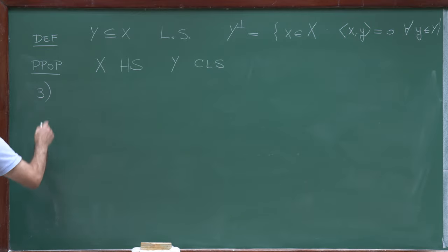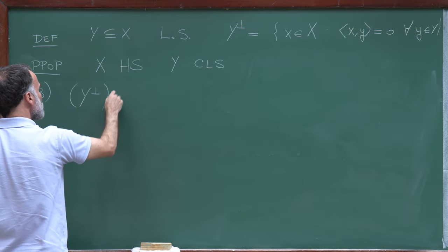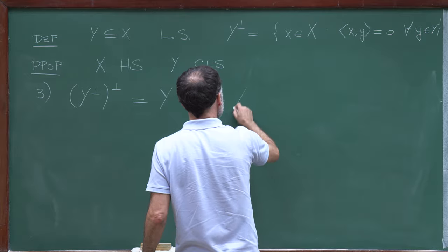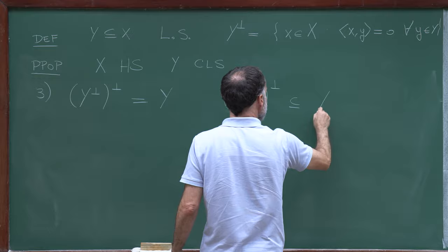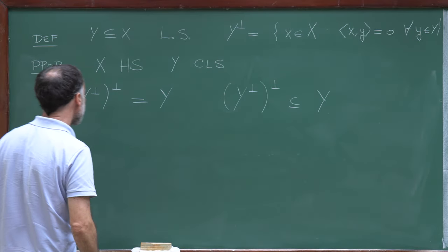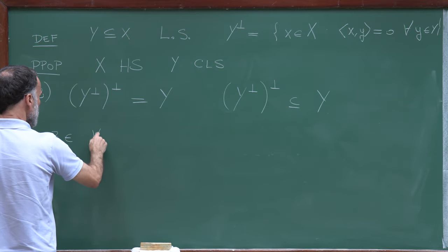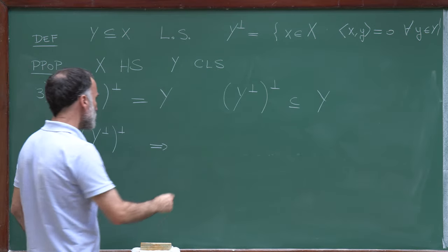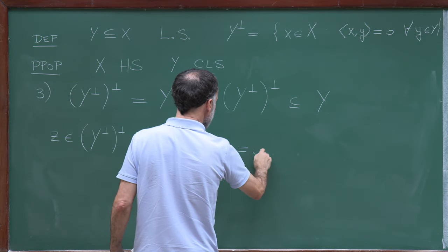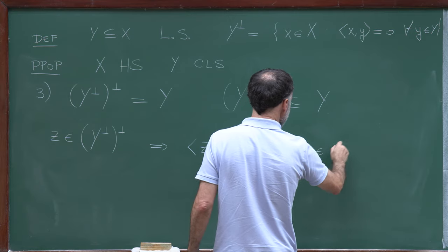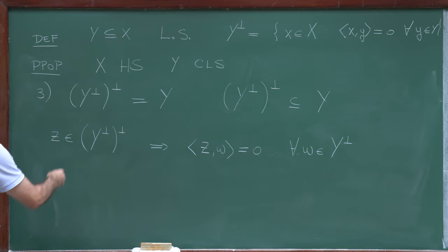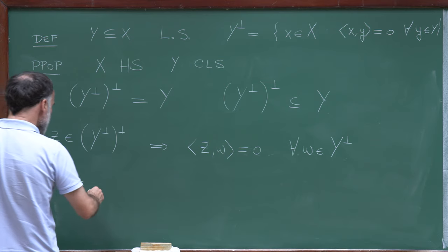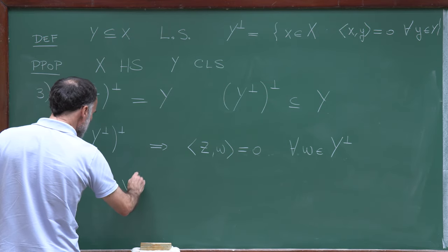The last claim is that (Y⊥)⊥ = Y. As usual, we prove each set is contained in the other. First, let Z belong to (Y⊥)⊥, meaning ⟨Z, W⟩ = 0 for all W in Y⊥. I want to show Z belongs to Y. Using the decomposition, write Z = U + V with U in Y and V in Y⊥.